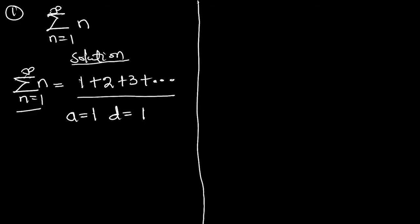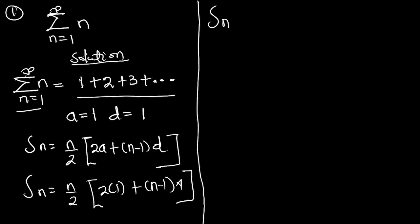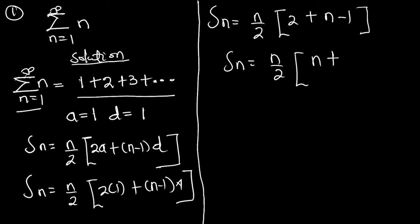Now let's write down the formula for the partial sum of an arithmetic series. We know that S sub n equals n over 2, multiplying 2a plus n minus 1 times d. Substituting our values, S sub n equals n over 2 times 2 times 1 plus n minus 1 times 1. Simplifying, S sub n equals n over 2 times n plus 1.